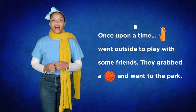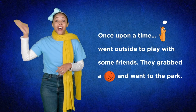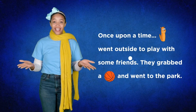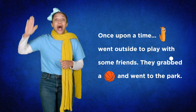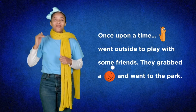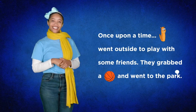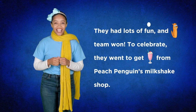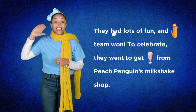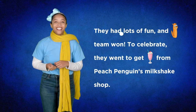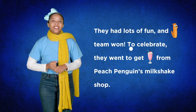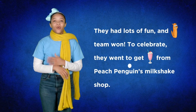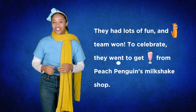Once upon a time, orange otter went outside to play with some friends. They grabbed a basketball and went to the park. They had lots of fun and orange otter's team won. To celebrate, they went to get milkshakes from Peach Penguin's milkshake shop.